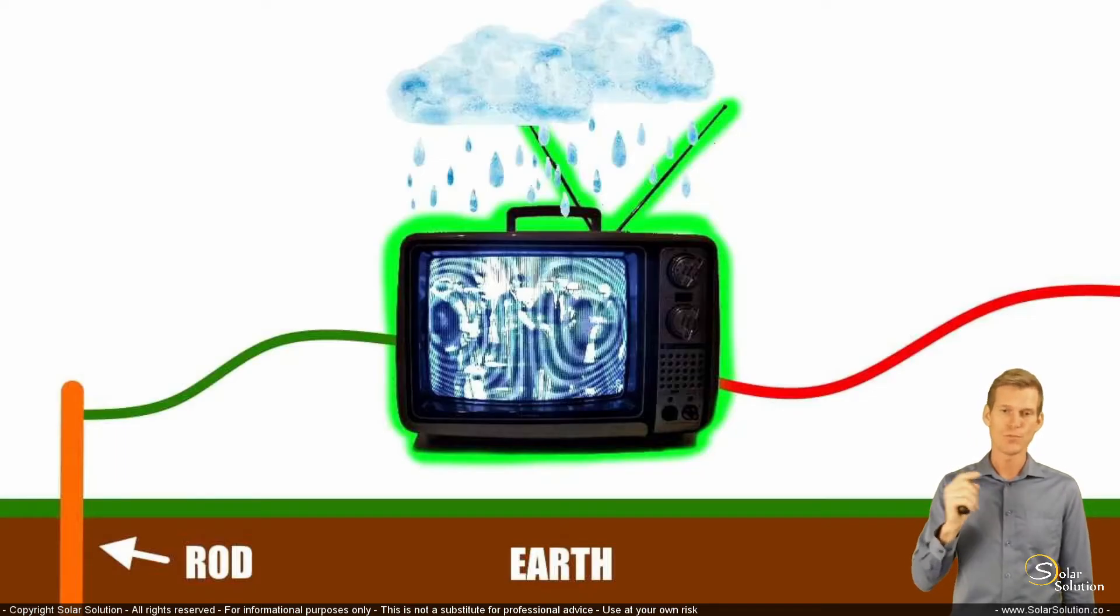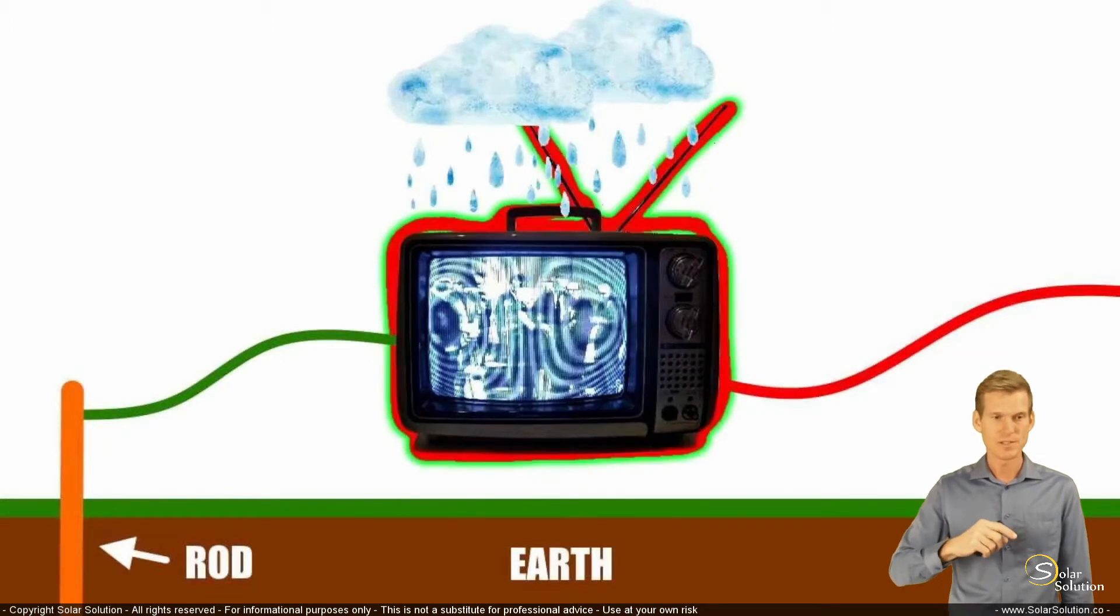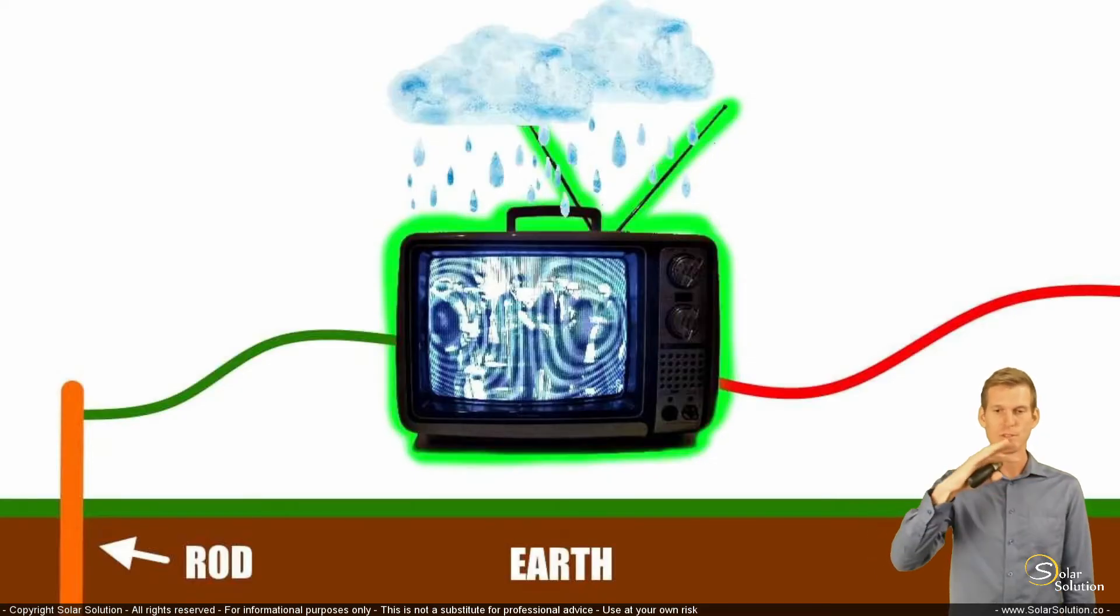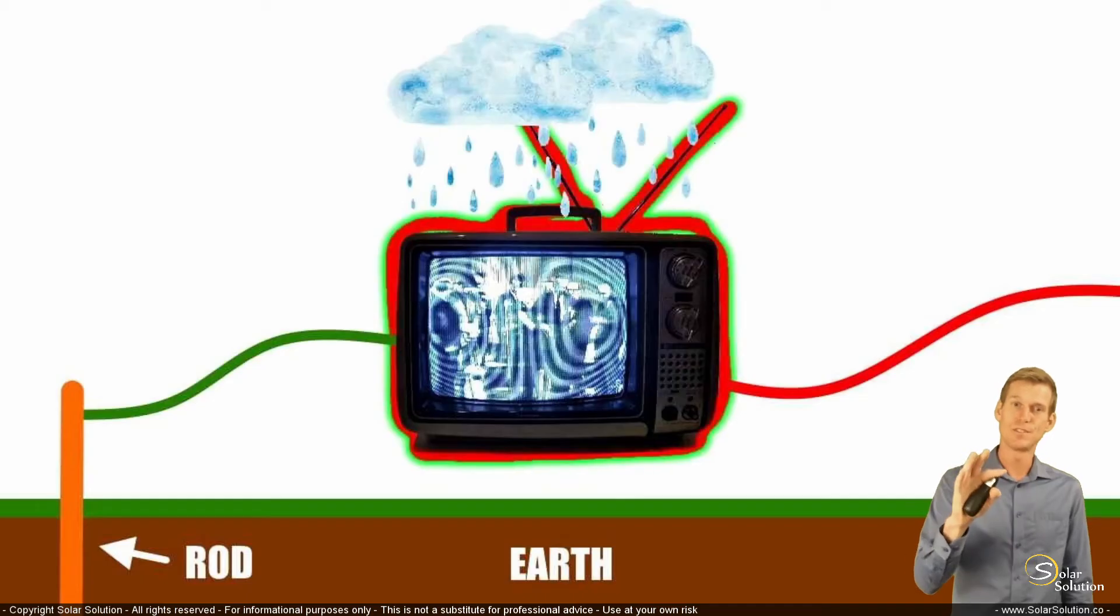If you would now walk outside and you want to change the channel, whatever, you're touching your television, you would get an electric shock. That is really, really dangerous, right? Because now all of a sudden the armature of the television is live. It is conducting electricity. If you would touch it, you would get a shock.